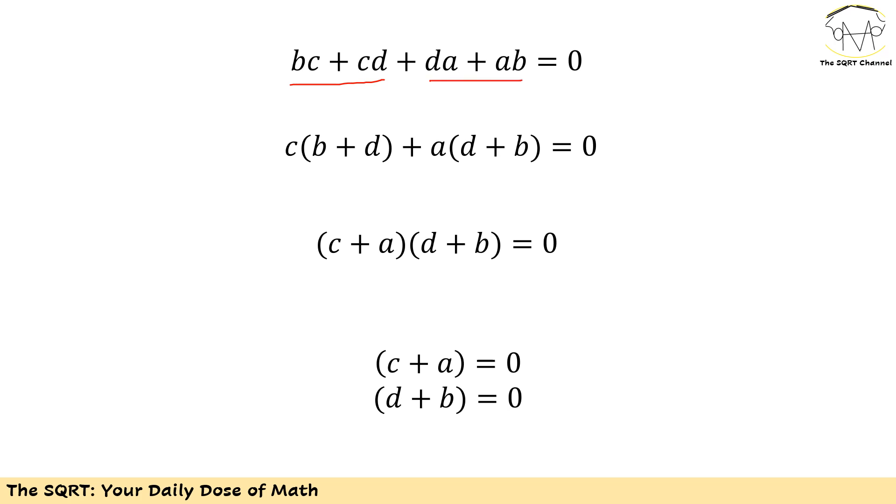Now let's see how I'm going to use this. For now, bc + cd + da + ab can be factored out. For the first two I can factor out c, and for the second two I can factor out a. Then I will end up with c(b + d) + a(d + b), which equals (c + a)(d + b) = 0.